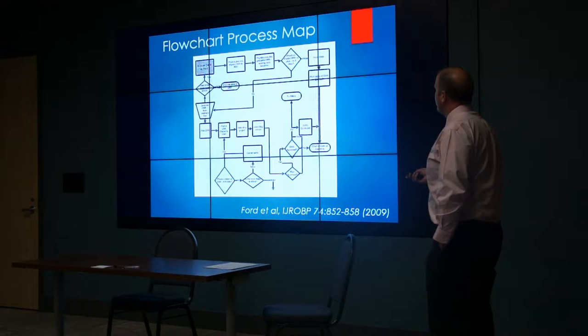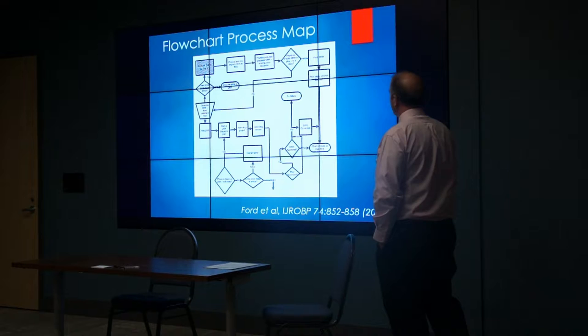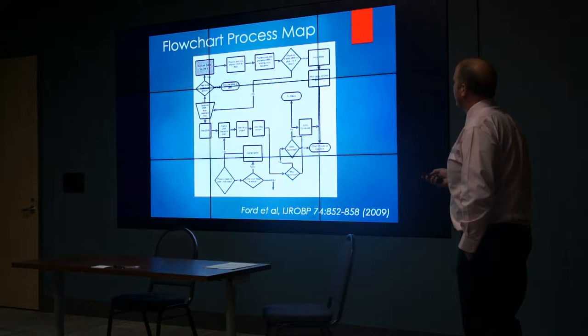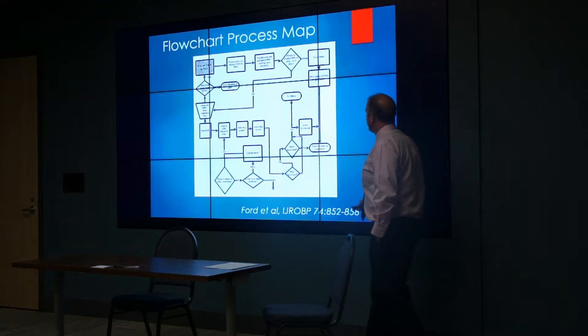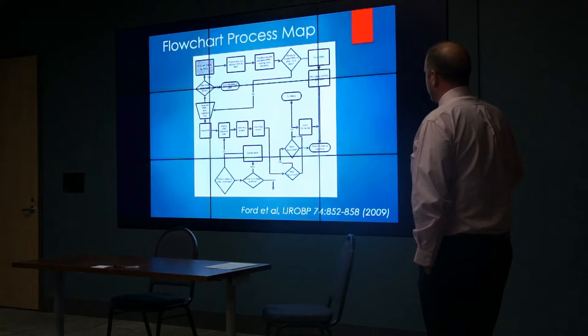Here's another example of a flowchart from a paper by Eric Ford at Hopkins, where they looked at the flow chart for image-guided radiation therapy. Rather than using a tree diagram, they used a flowchart with a yes-or-no sequence—does the DR approve? Yes, it goes here; if not approved, then we go to billing or DRRs corrected, et cetera. That's another way of outlining how a process tree could take place.